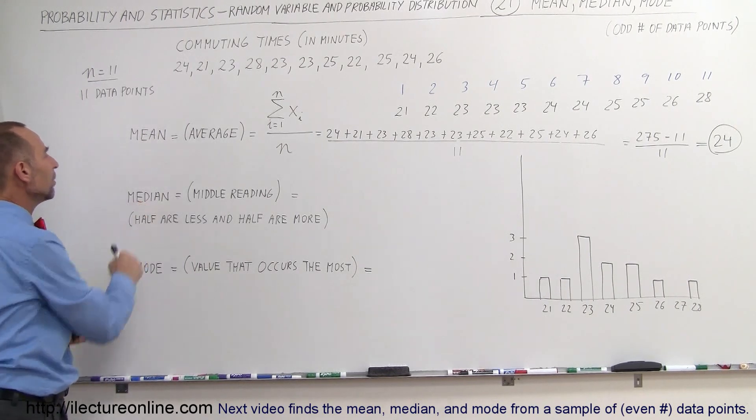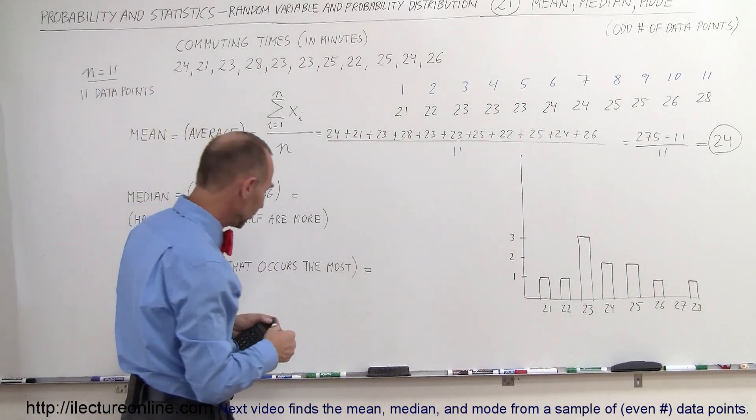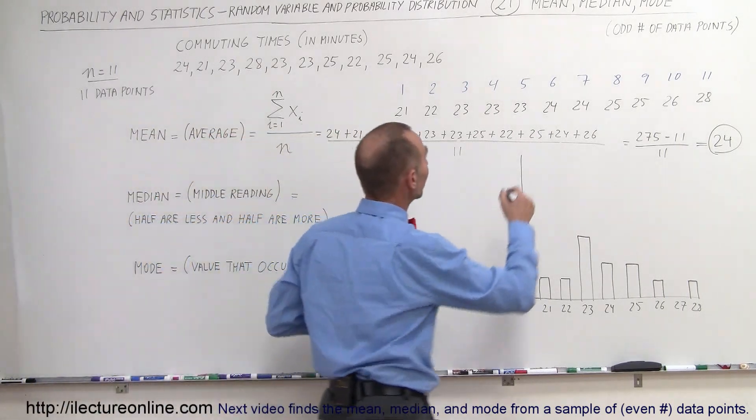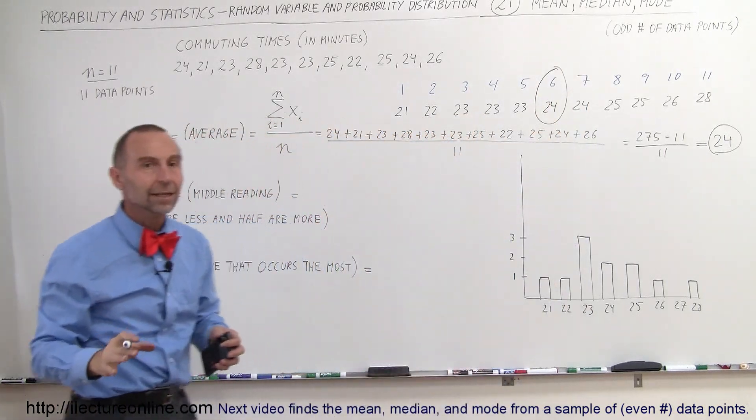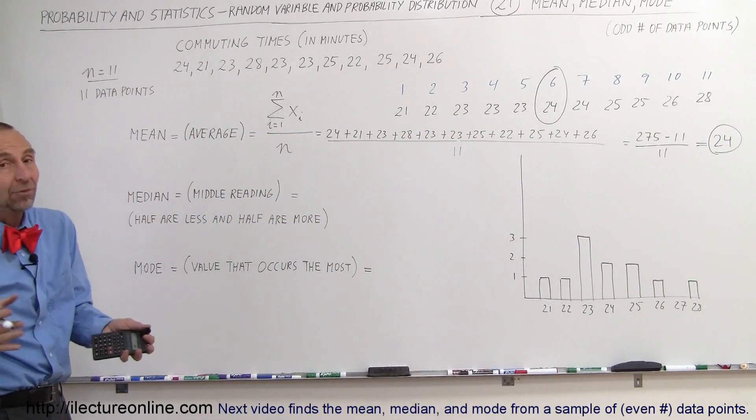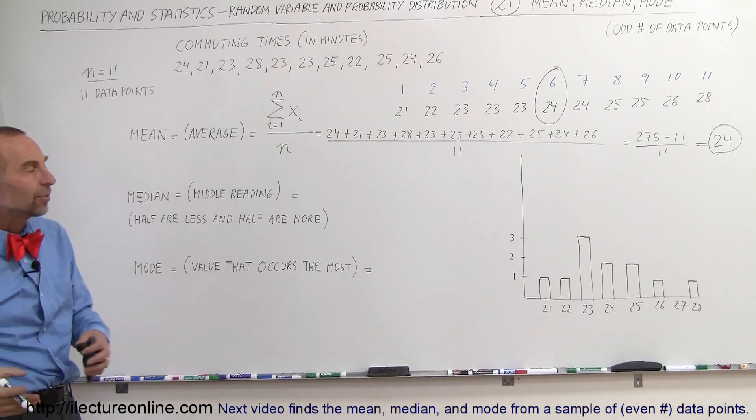How about the median? The median is the middle reading. Since there's 11 readings, the middle reading would be this one right here. So in this case, the median, the middle reading, happens to be the same as the average reading. Sometimes that happens, sometimes that doesn't.